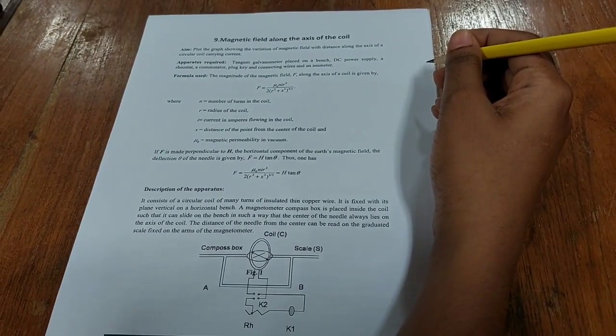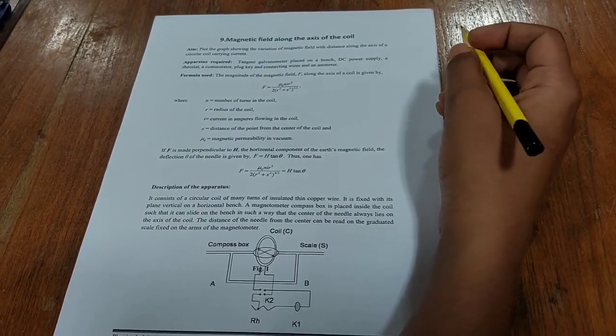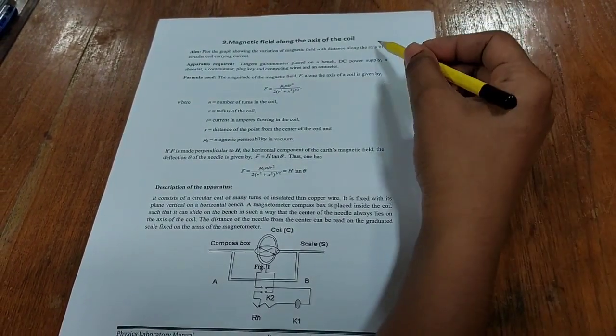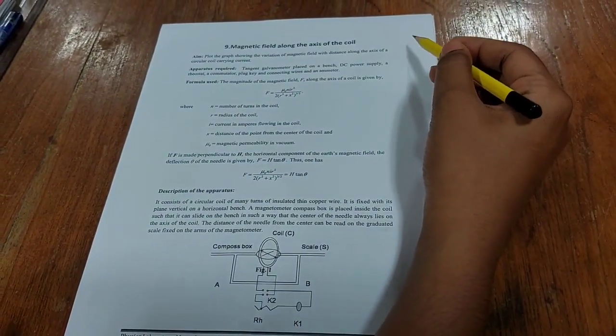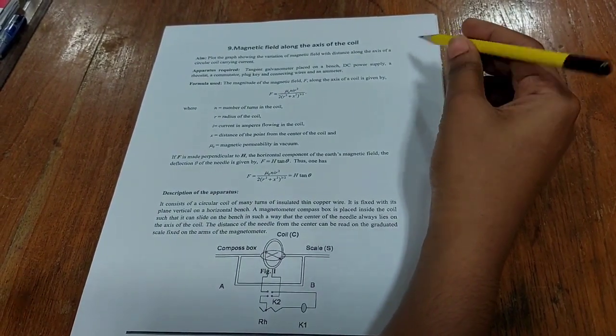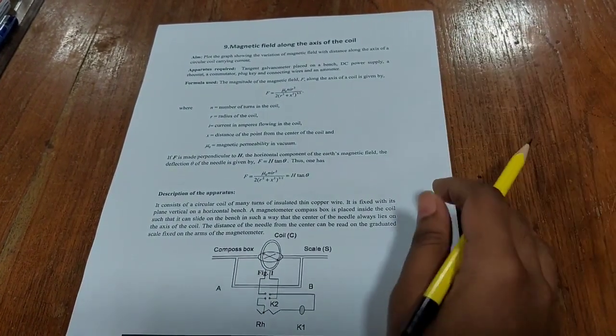There are two parts to performing the experiment. The first one involves finding the variation of magnetic field along the distance of the axis of the coil. The second part is to find the horizontal component of Earth's magnetic field.